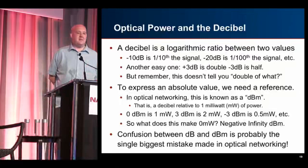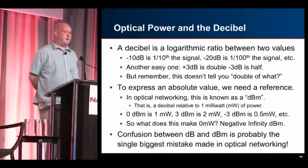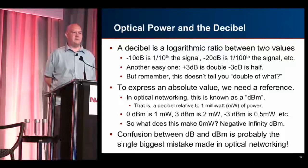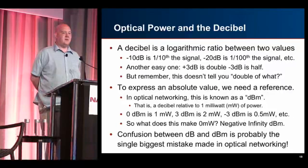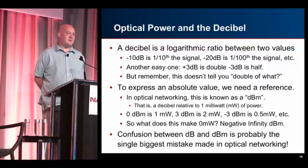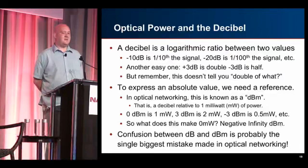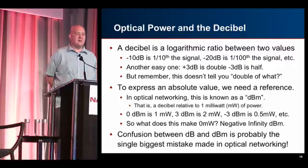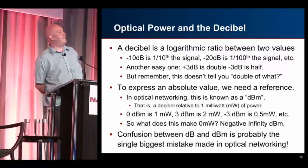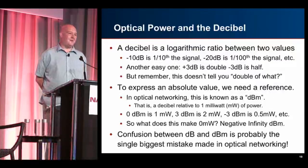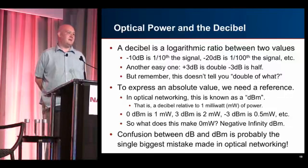Minus 10 dB is one-tenth the signal; minus 20 dB is one-hundredth. Plus 3 dB is about double, minus 3 dB is about half — but it doesn't tell you double or half of what. To express an absolute value you need a reference, and in optical networking that's called dBm — decibels relative to one milliwatt of power. Zero dBm is one milliwatt; 3 dBm is two milliwatts; minus 3 dBm is 0.5mW. This is probably one of the biggest areas people mess up — data center techs reading light meters often confuse dB and dBm.